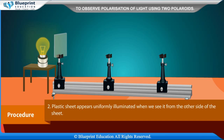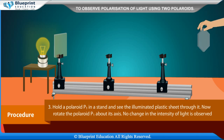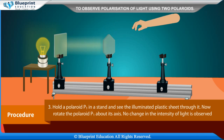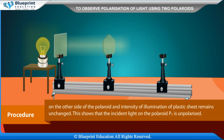Allow unpolarized light from an electric bulb to fall over the white plastic sheet. The plastic sheet appears uniformly illuminated when seen from the other side. Hold polaroid P1 in a stand and see the illuminated plastic sheet through it. Now rotate polaroid P1 about its axis. No change in intensity of light is observed, showing that the incident light on polaroid P1 is unpolarized.